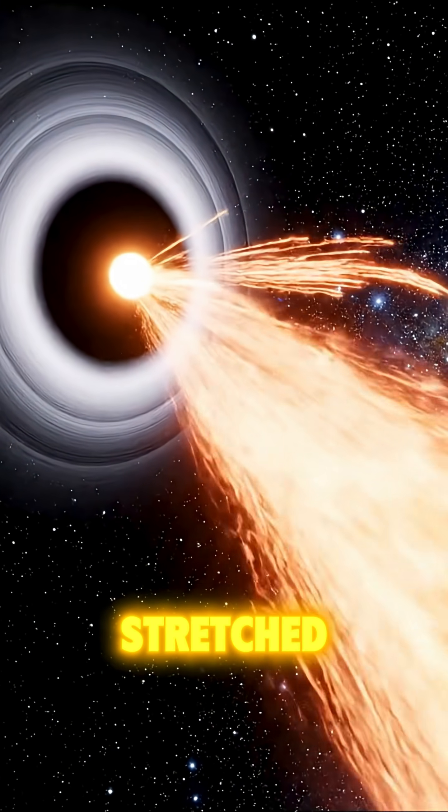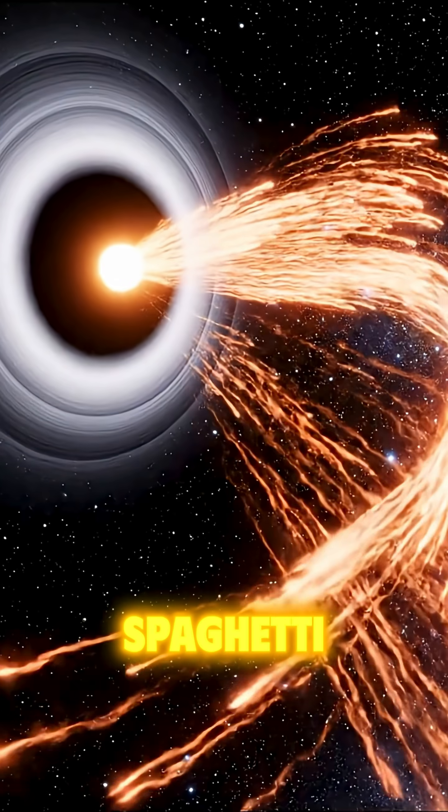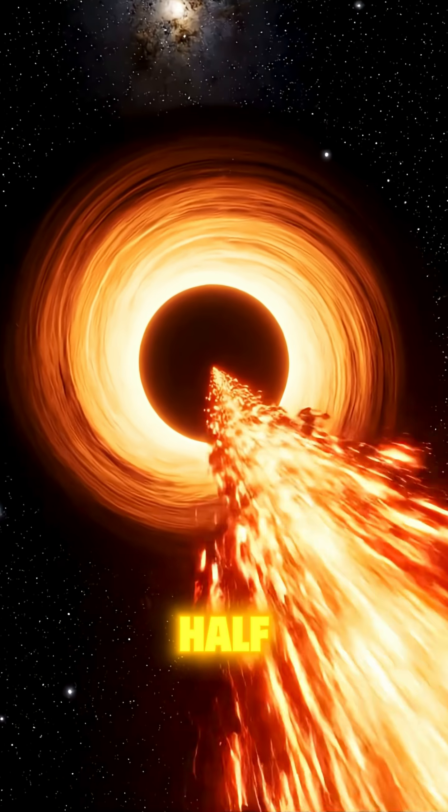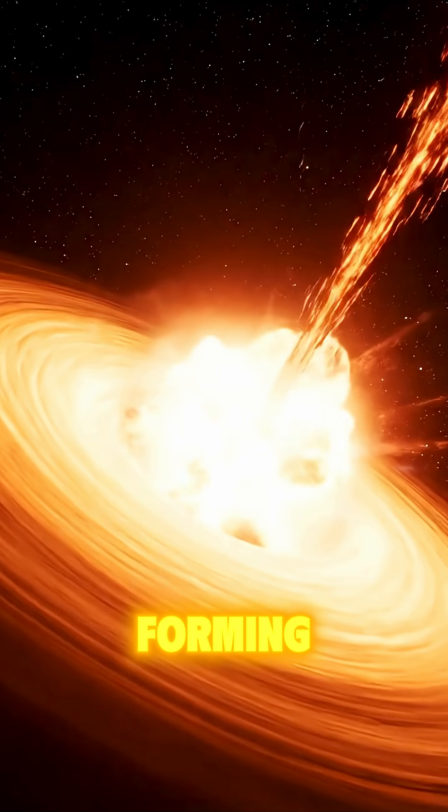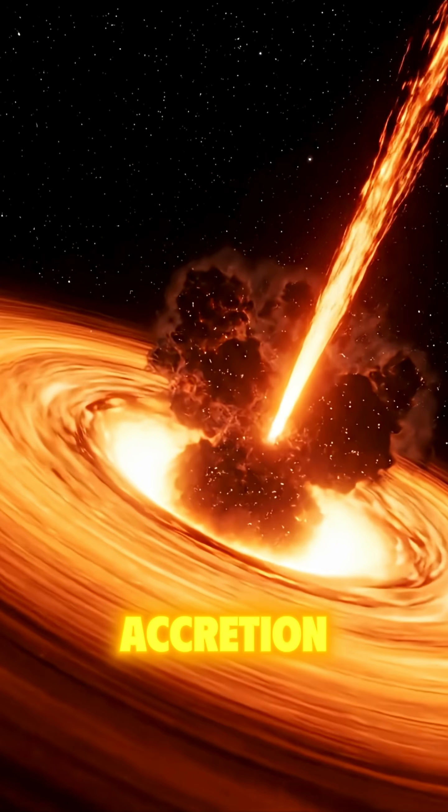The star is shredded and stretched into a hot, thin, spaghetti-like stream of matter. Half the material is flung out into space. The other half feeds the black hole, forming a blindingly bright accretion disk.